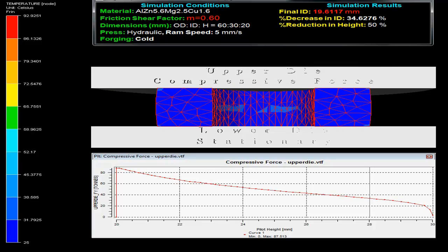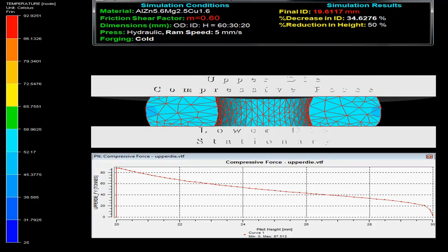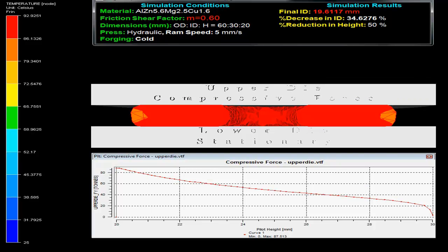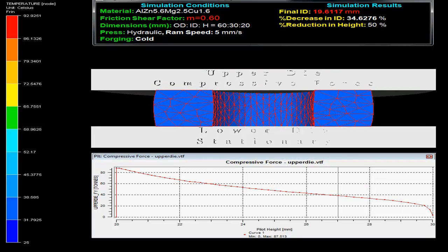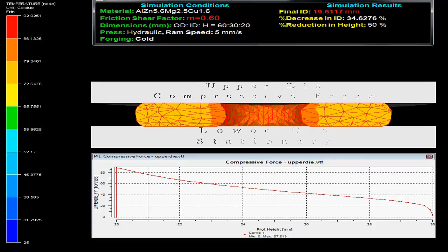At the bottom, a graph of force on the upper die versus pilot height is shown. The temperature developed during the process can be compared using the scale on the left side.